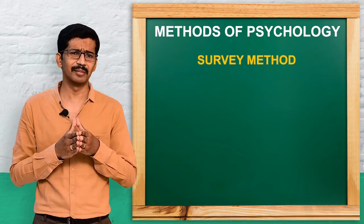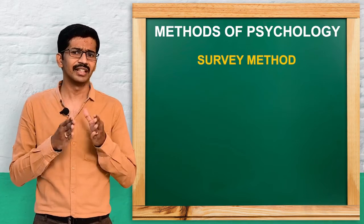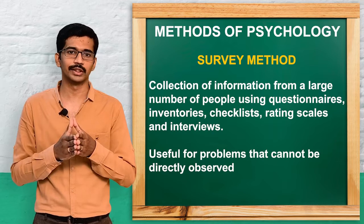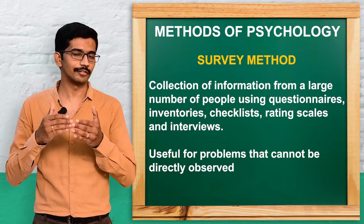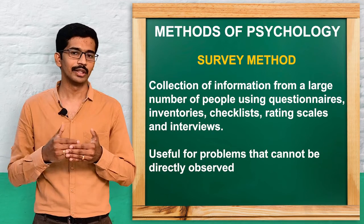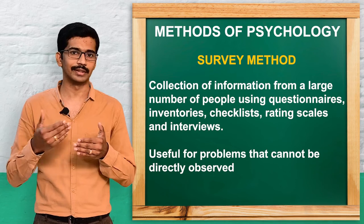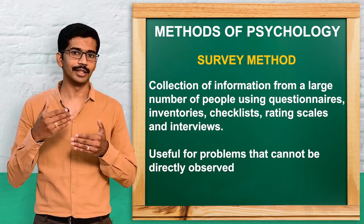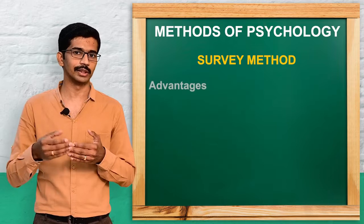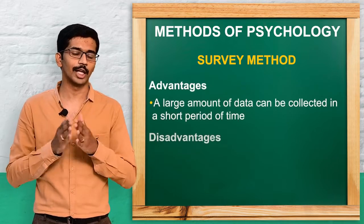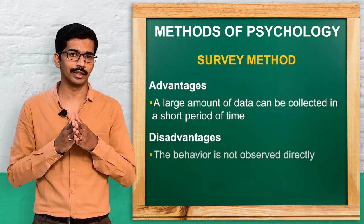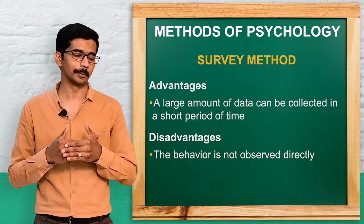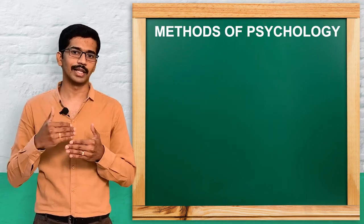The next method is the survey method. Within a limited time, we can collect information from a large population — that is the survey method. We use certain techniques like questionnaires, rating scales, and inventories to collect information. Collecting information from a large number of people within a short period is one of the main advantages of this method.